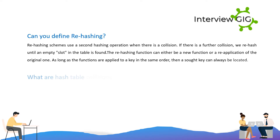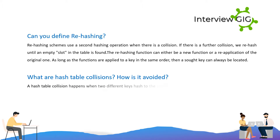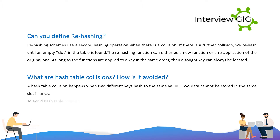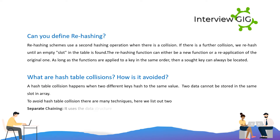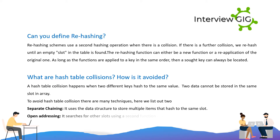What are hash table collisions and how are they avoided? A hash table collision happens when two different keys hash to the same value. Two data items cannot be stored in the same slot in an array. To avoid hash table collisions there are many techniques; here we list two: separate chaining, which uses a data structure to store multiple items that hash to the same slot; and open addressing, which searches for other slots using a second function and stores the item in the first empty slot that is found.